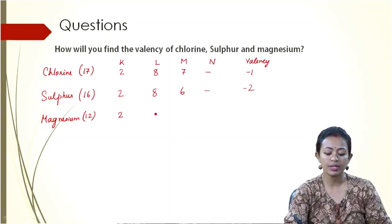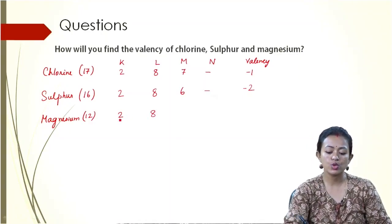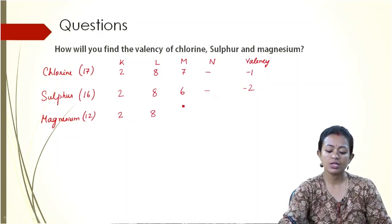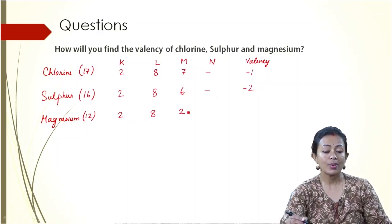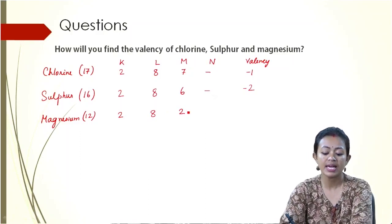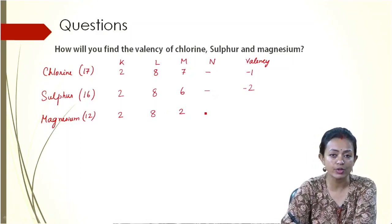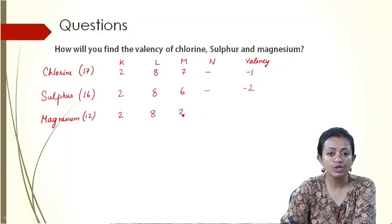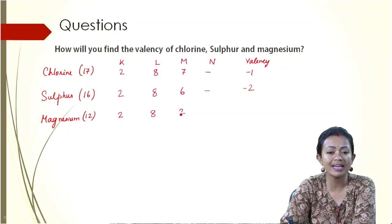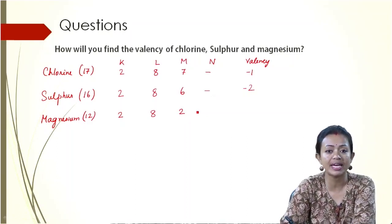So the first shell takes 2, 8. So 2 and 8 makes 10, so the leftover goes 2. In case of Magnesium, what happens? It would not gain electrons because it is running short of 6 electrons. Now it will be energetically very difficult for it to gain 6 electrons.